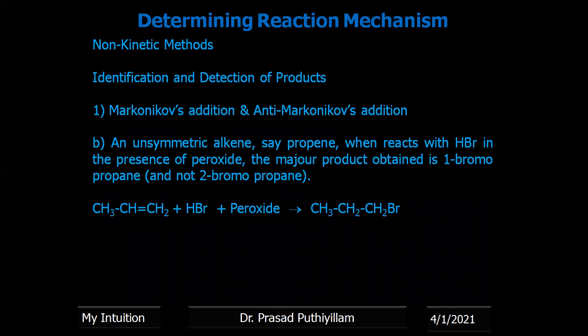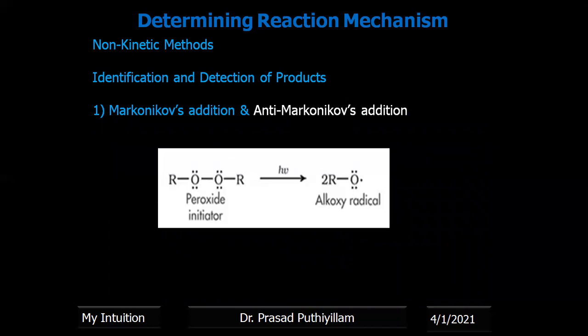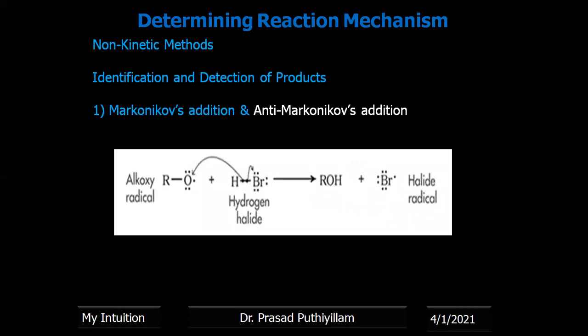Based on the product, the reaction mechanism is proposed. Whereas if the same propene reacts with HBr in the presence of traces of peroxide, the final product obtained is not 2-bromopropane but 1-bromopropane. Its mechanism is explained as a free radical mechanism and it is an anti-Markovnikov addition reaction. Initially, the peroxide dissociates in the presence of sunlight or heat to become the corresponding free radical — here it is an alkoxy free radical.